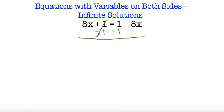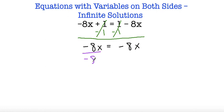This cancels out because they're opposites, so on the left side I'm left with negative 8x. And here I also have 1 minus 1, so that also cancels out. So negative 8x is equal to negative 8x. If I want to get x by itself I'm going to divide both sides by negative 8, and I end up with x is equal to x — because negative 8 divided by negative 8 is 1. So x equals x, which means x can be any number and it'll always be equivalent.